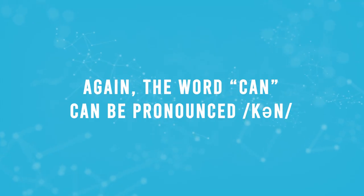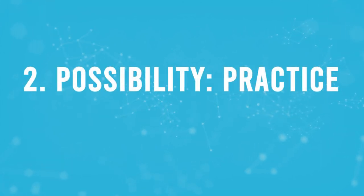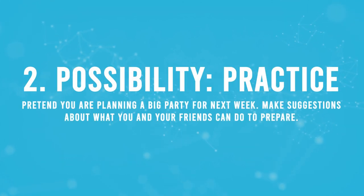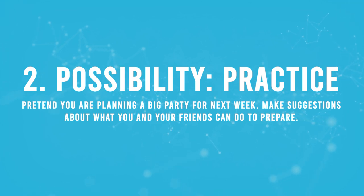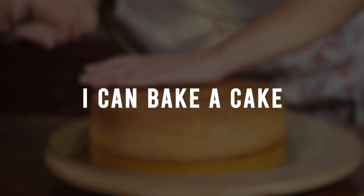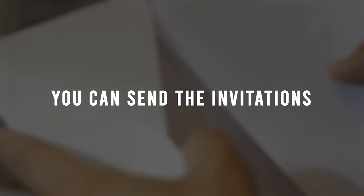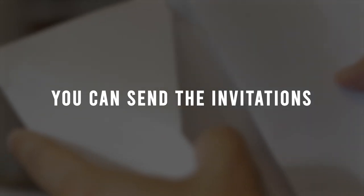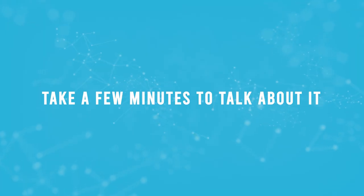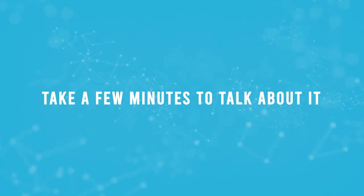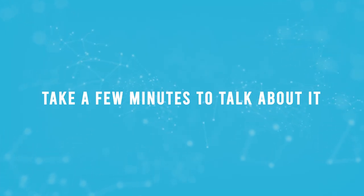Again, the word can can be pronounced 'cun.' Possibility — practice: pretend you're planning a big party for next week. Make suggestions about what you and your friends can do to prepare. For example: I can bake a cake. Boris can bring the candles. You can send out the invitations. Take a few minutes to talk about it. Pause the video and talk with your partners.